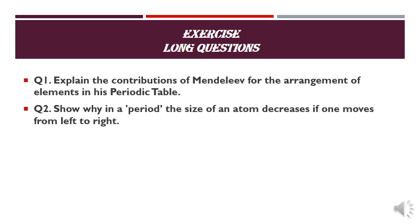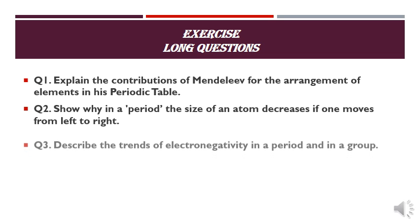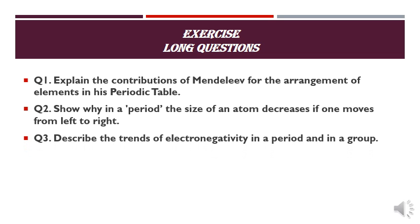Question number 2: show why in a period the size of an atom decreases if you move from left to right. Discuss in detail why atomic size decreases, with diagrams and with the example of the period.